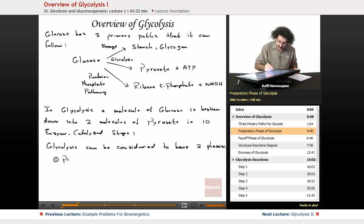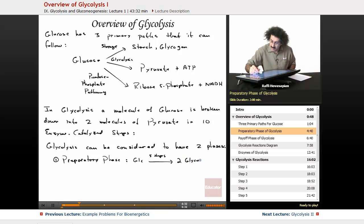The first is called the preparatory phase or the investment phase. This is where glucose, in five steps, is converted to two molecules of glyceraldehyde-3-phosphate.